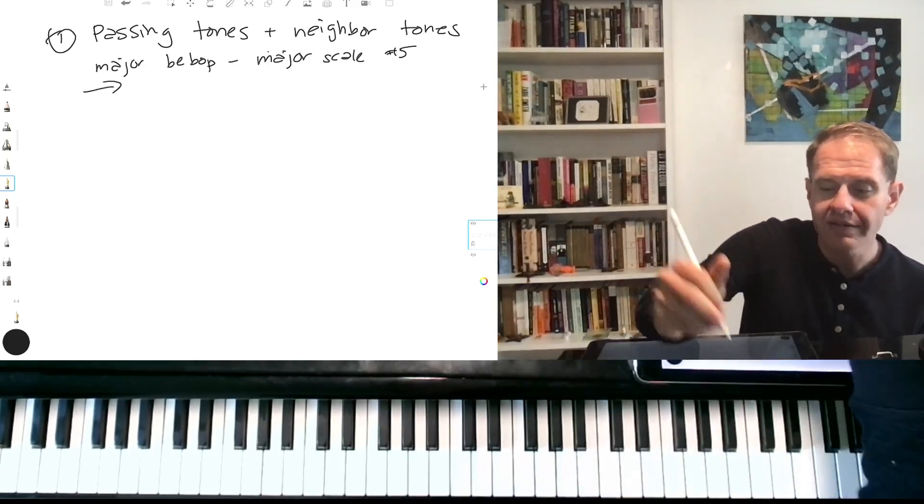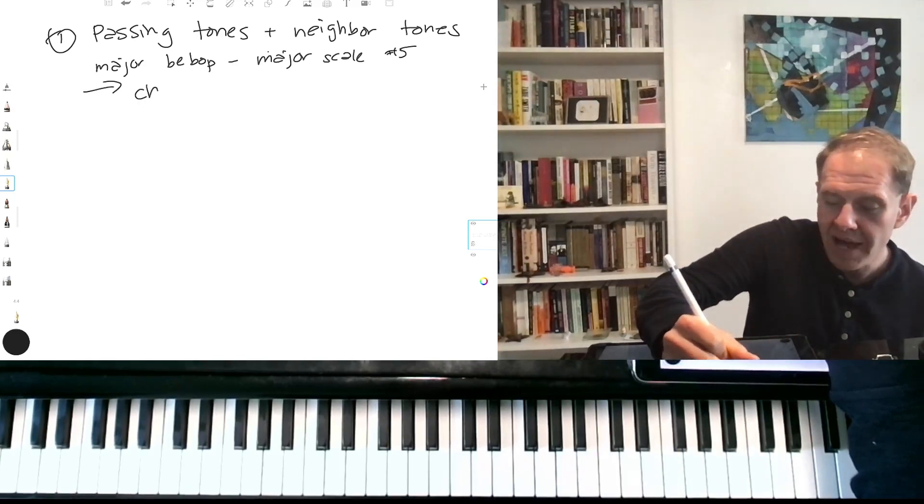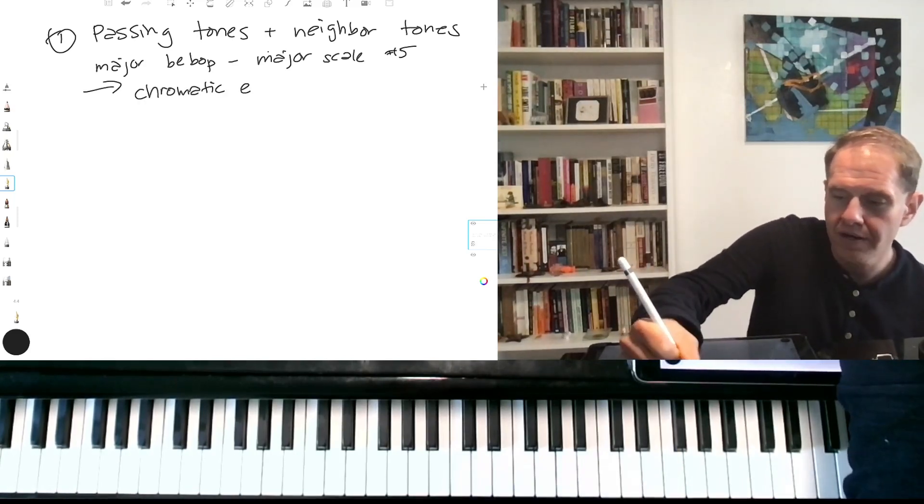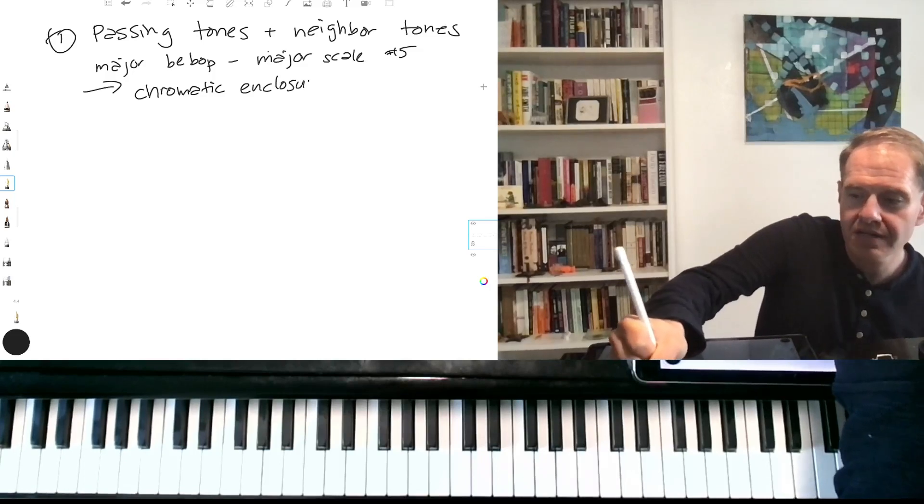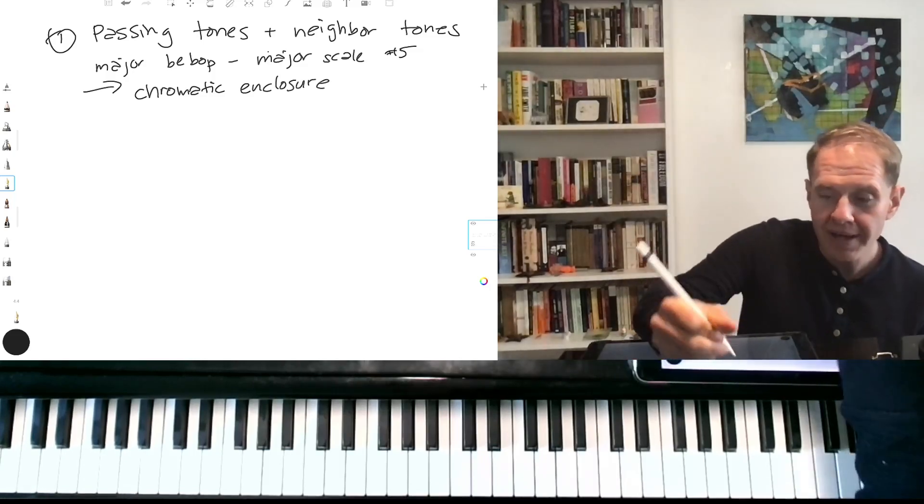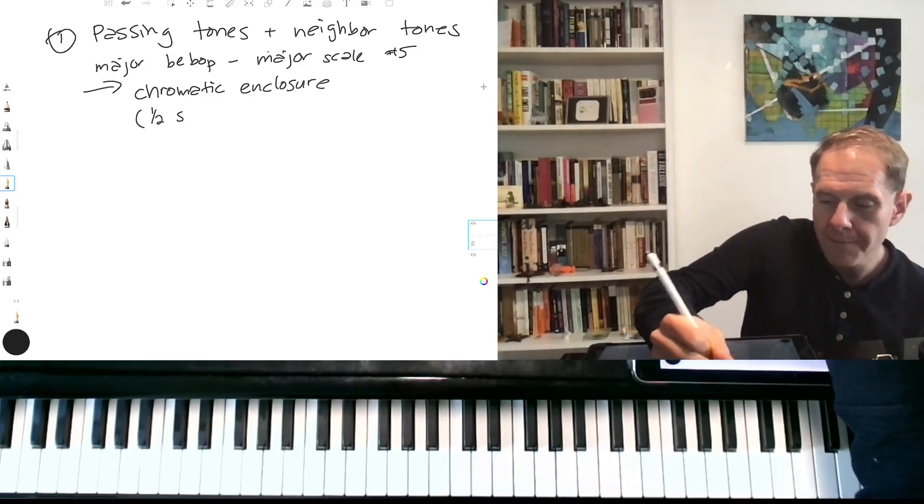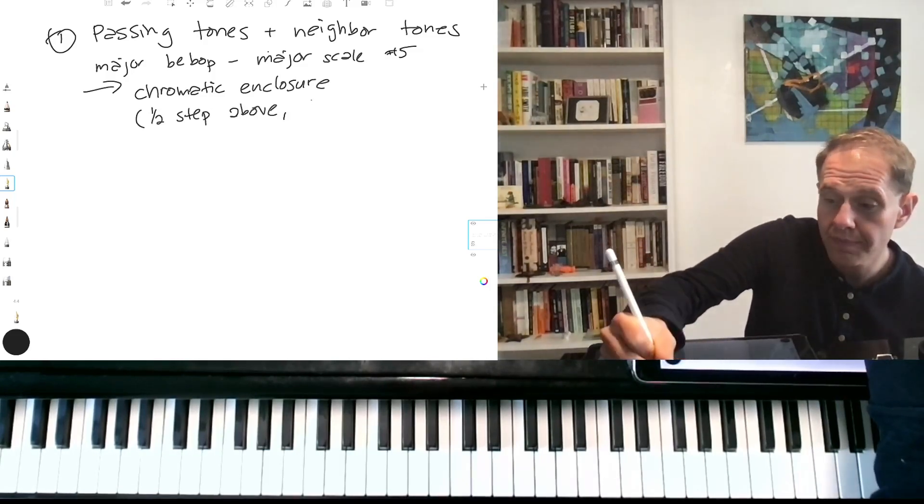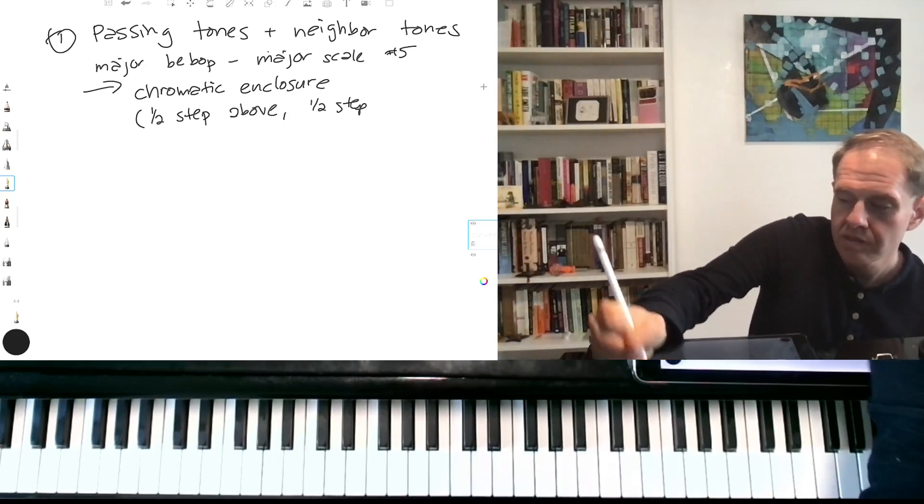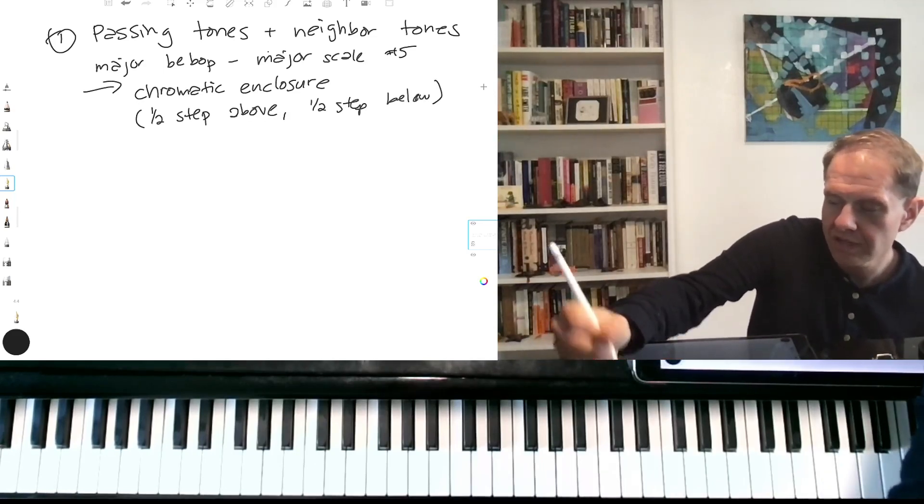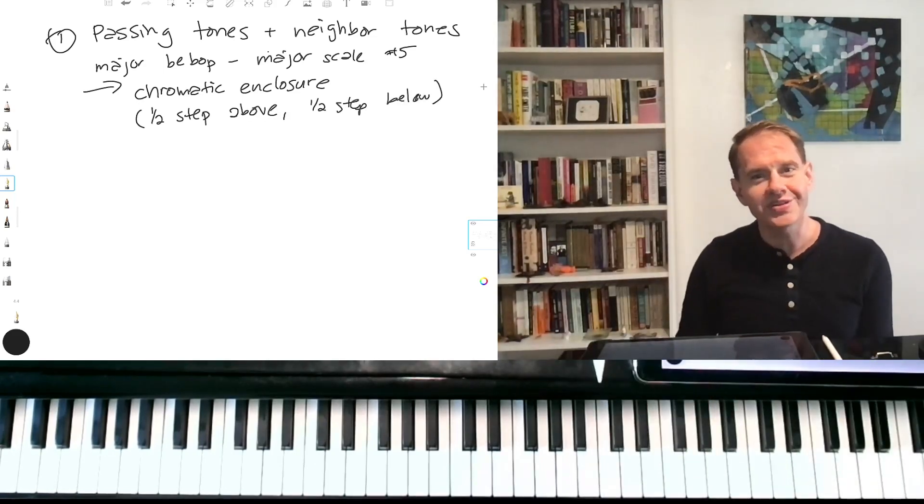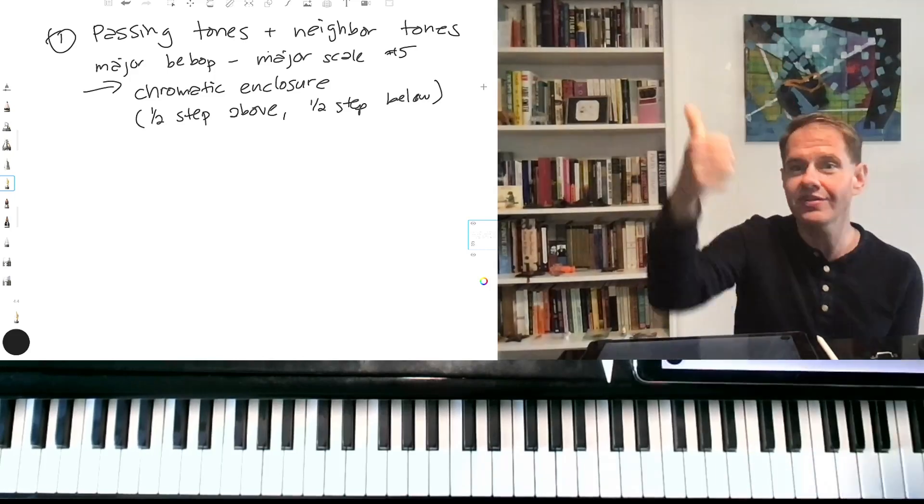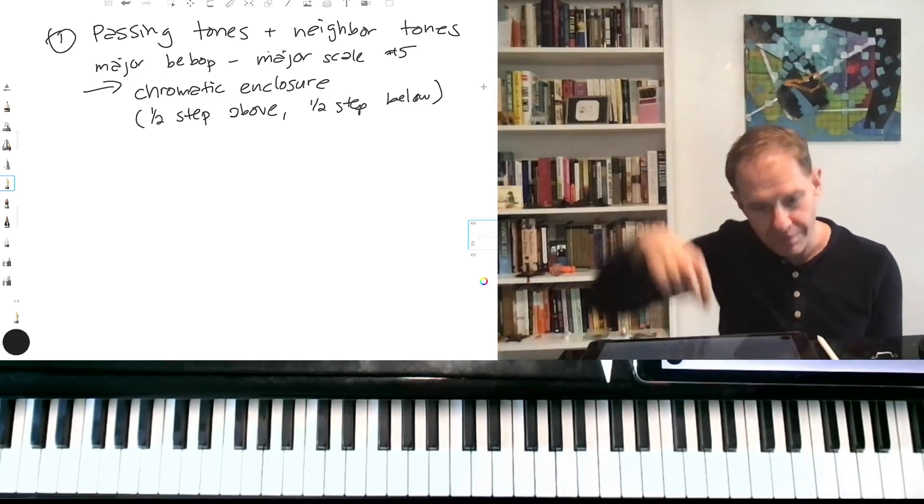Now, a very special kind of neighbor tone is called a chromatic enclosure. Enclosures are very widely used in jazz styles. And with a chromatic enclosure, you're going to go half step above and then a half step below your target note. So it's kind of like a neighbor on both sides—you're going to go over to your neighbor on this side, then you'll go to the neighbor on that side, and then you'll come back home.